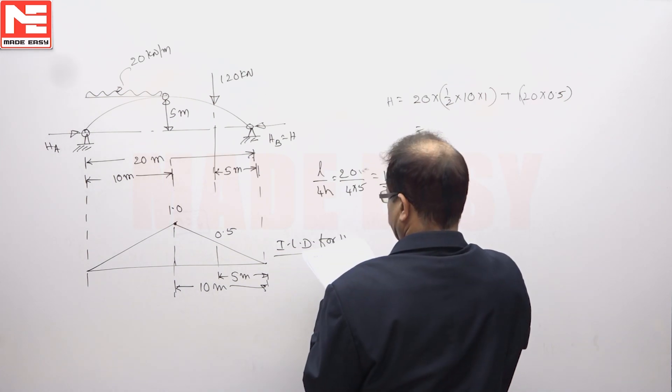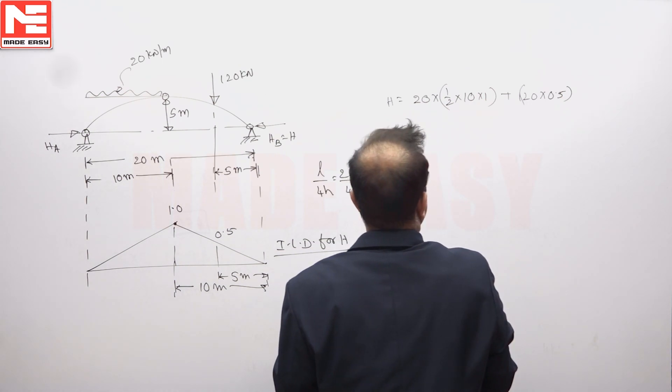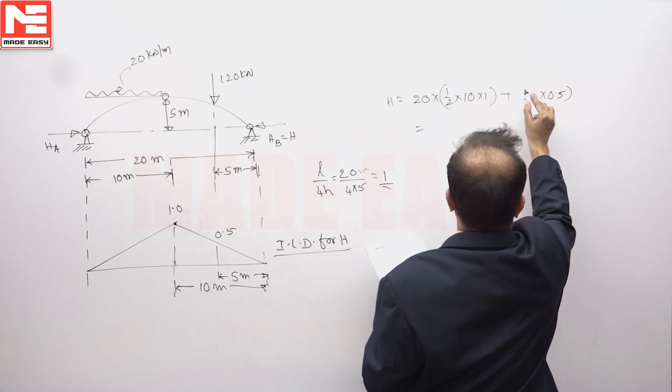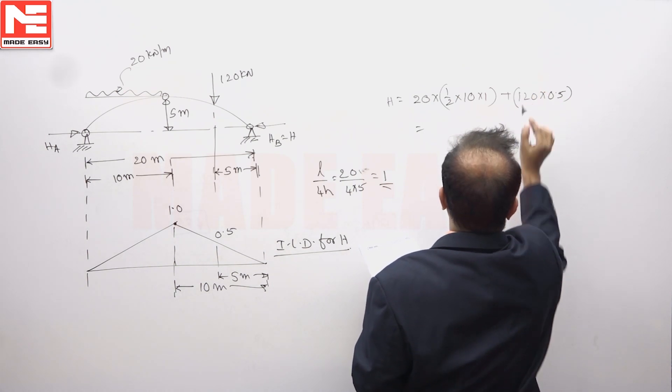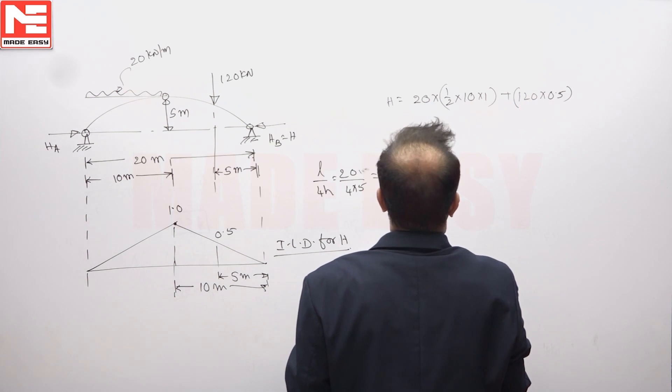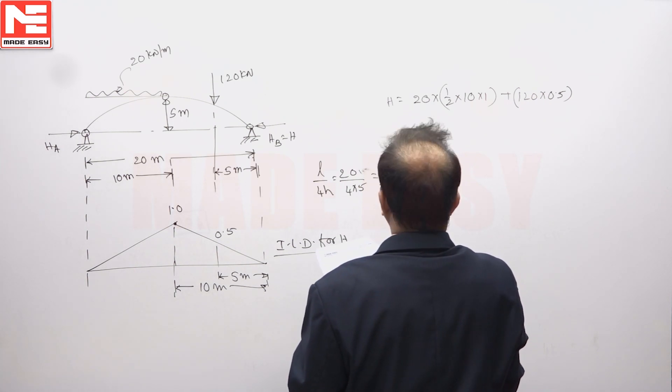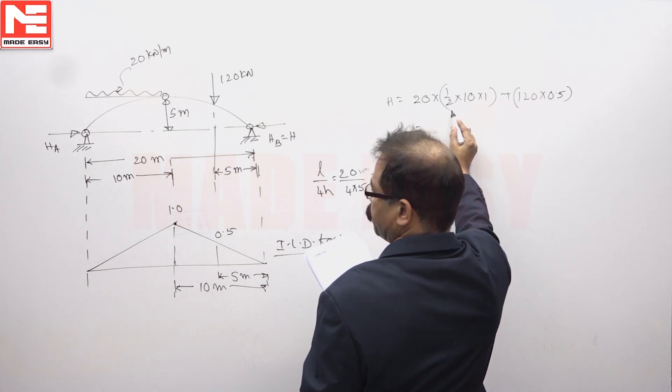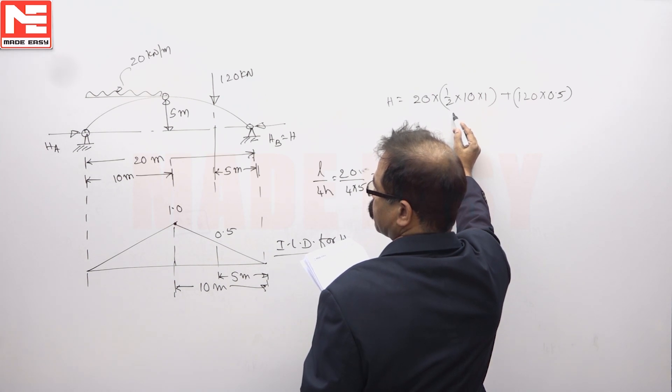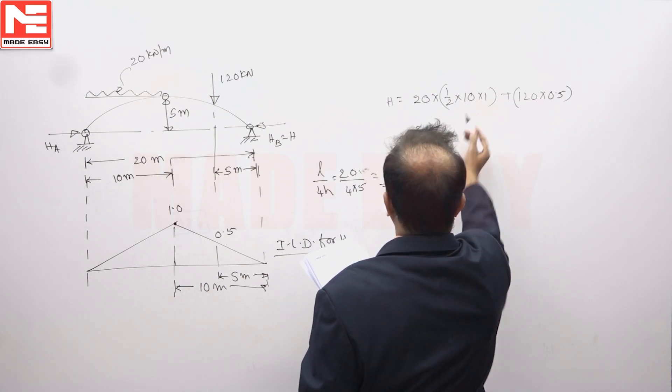You will get 5, 25 plus 25 plus this height is 120 into 0.5 is 60. This is area of ILD, 20 into half base into height.